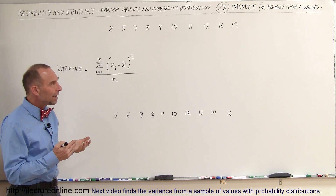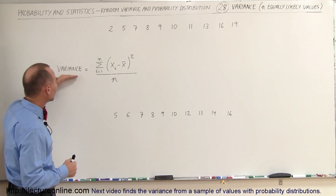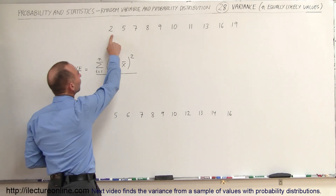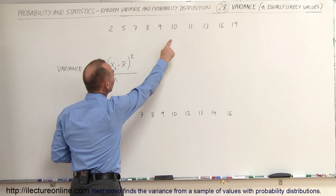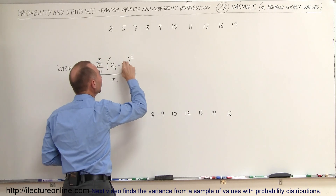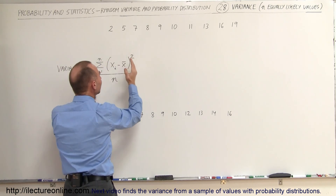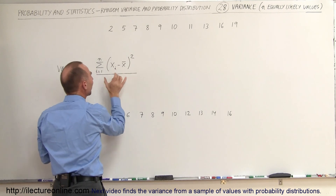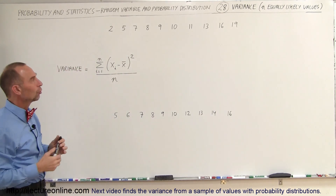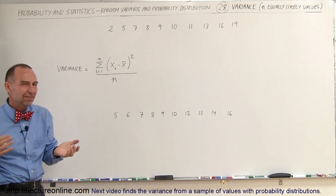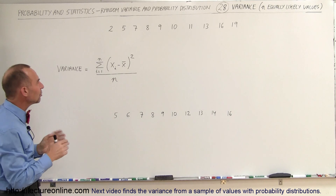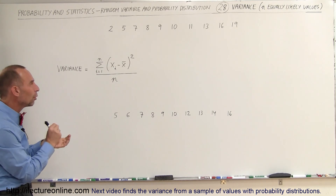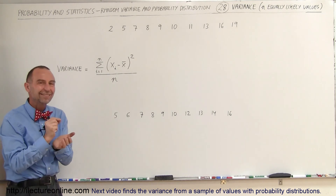In that case we can calculate the variance as equal to the sum of each of those ten values, subtract from that the average value of the ten, take that quantity squared, sum it all up, and divide it by N — N being the total number of values. We'll go ahead and work it out and then understand a little bit more about what exactly that means.